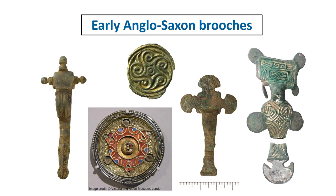We use the term 'early Anglo-Saxon' here rather than 'early medieval' because nearly all of the early medieval brooches from the earlier part of the period recorded on the database are in fact Anglo-Saxon. There are very few Irish, French, Cornish, Scottish or Welsh brooches — less than 20 — so we won't cover them here. Most of the time the cultural label Anglo-Saxon and the period early medieval mean the same thing in practice, but it's good to remember what the difference really is.